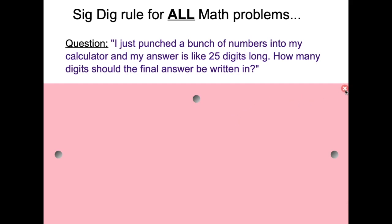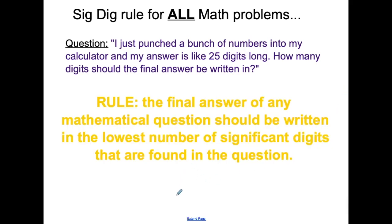Not all of them, but it's a great question. So you do have a billion digits. Well, what do you do? Check this out. Here is the golden rule: the final answer of any mathematical question should be written in the lowest number of significant digits that are found in the question. Now, what does that actually look like? I have some examples.